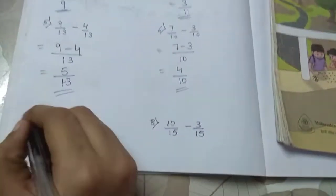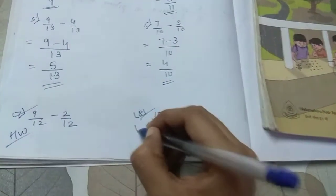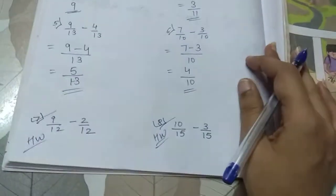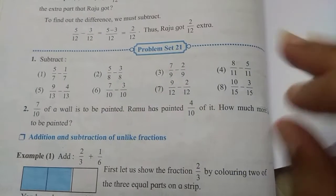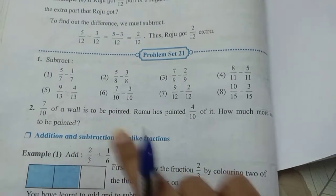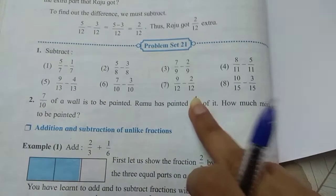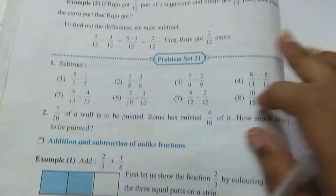Now 7th and 8th one are easy. They're similar to previous sums. Now let's see the word problem. 7 by 10 of a wall is to be painted. Ramu has painted 4 by 10 of it. How much more needs to be painted? Now see, let me explain you this by a presentation.